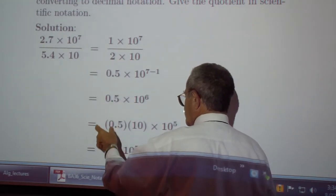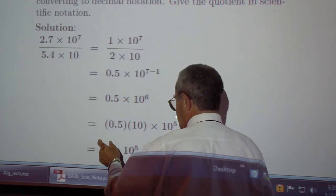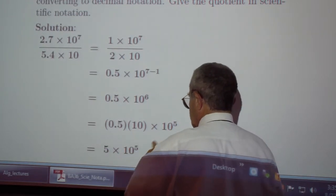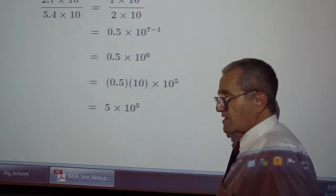Borrow a 10 to make the 0.5 a 5.0, a number between 1 and 10, and multiply by 10 to the 5. And you're done.